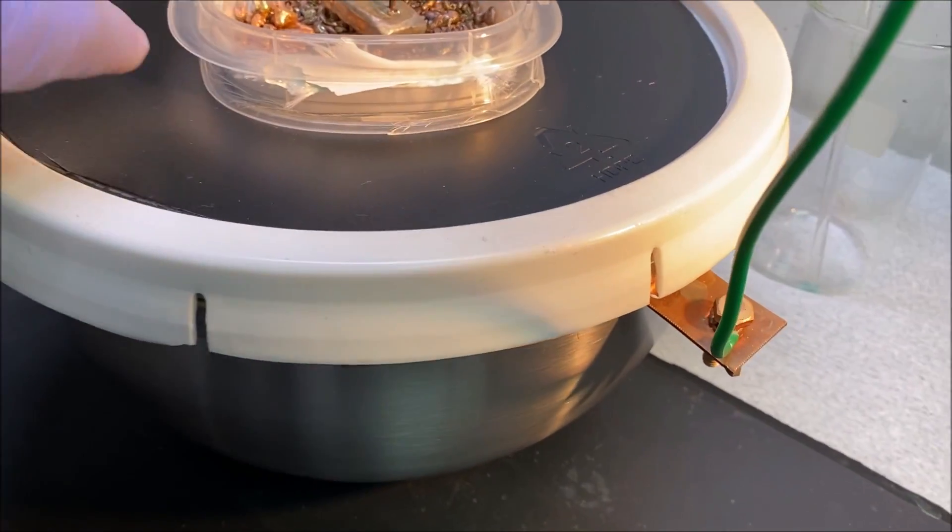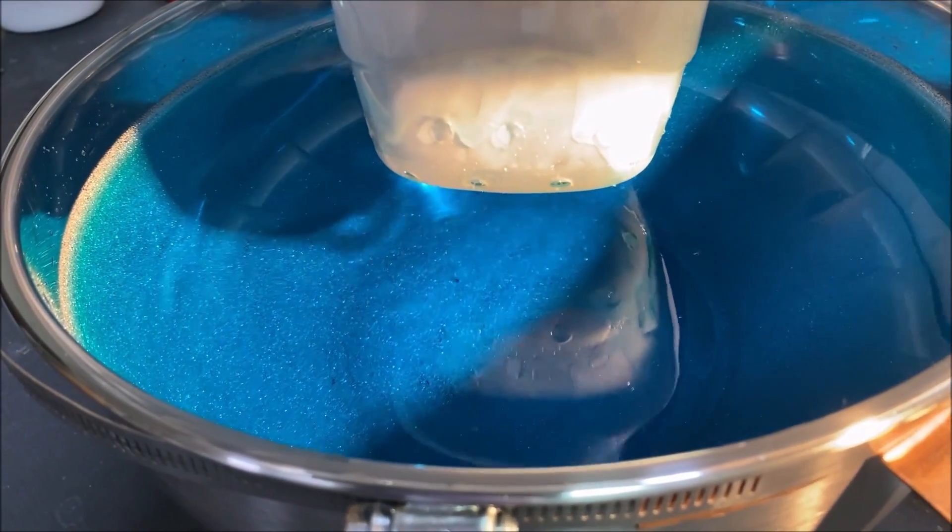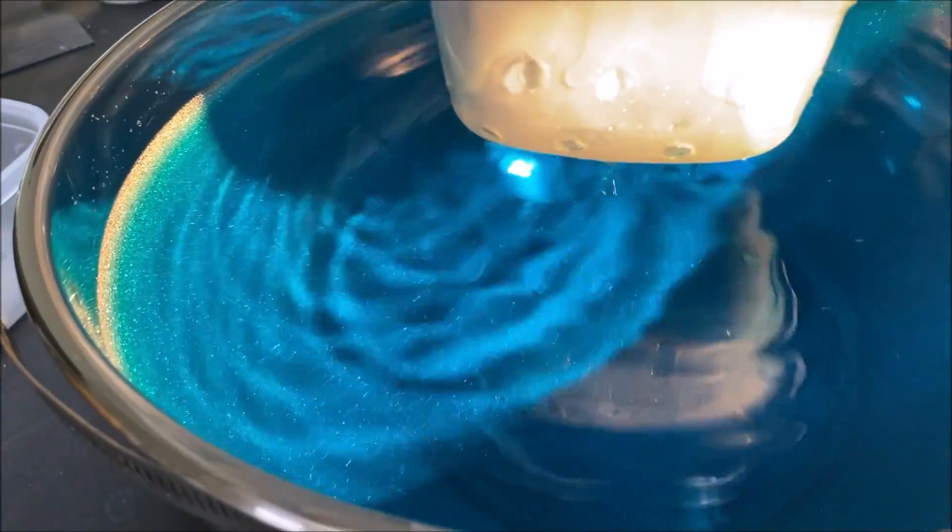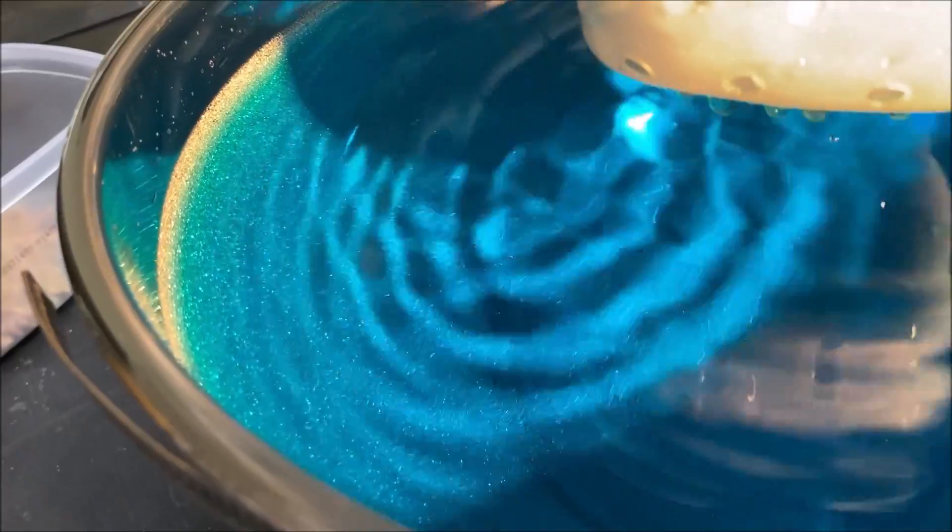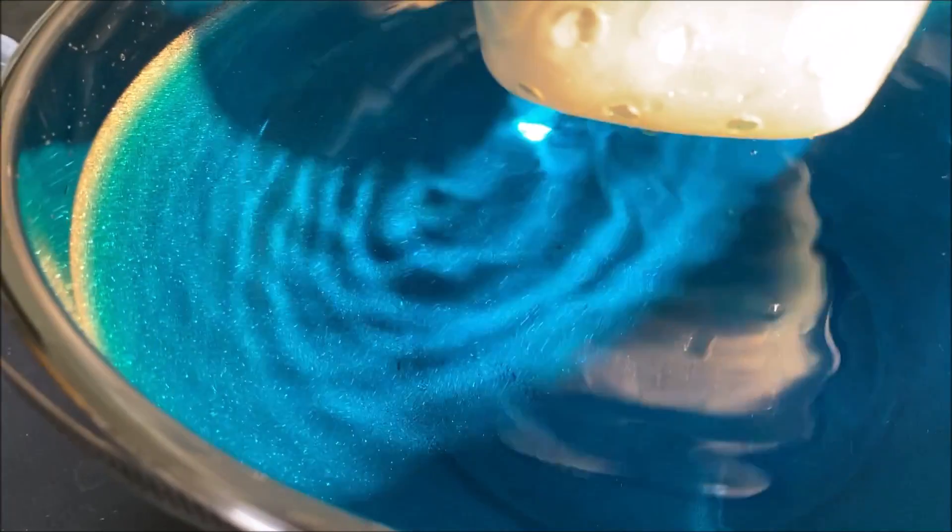Let's take a peek down in here and see what kind of crystal growth we got going on. Oh look at that man, those are beautiful. Silver crystals are already starting to form on the walls of the stainless bowl which is the cathode.